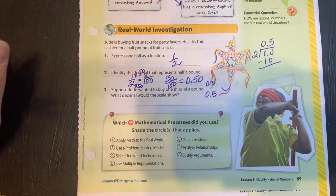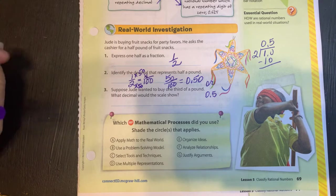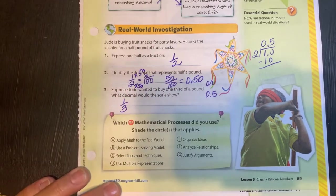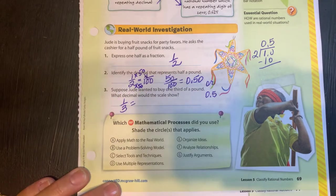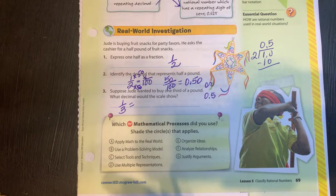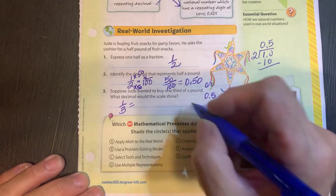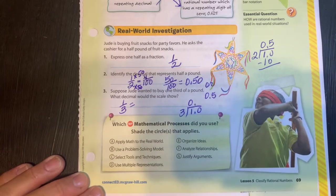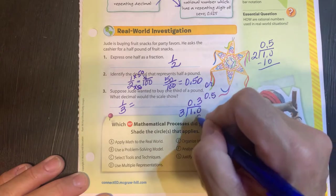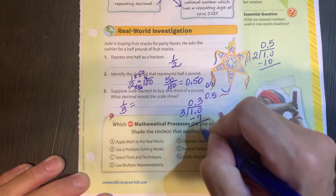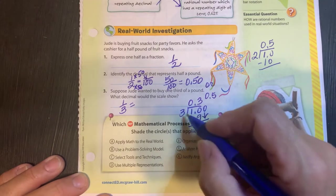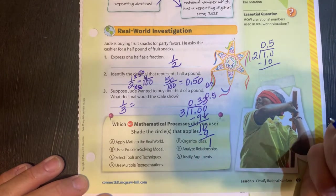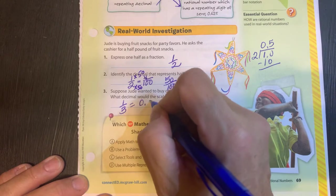It says suppose Jude wanted to buy one third of a pound. What decimal would the scale show? So one third looks like that, right? Three does not divide equally into 100, so we can't set it up where it's equal to 100. So I'm going to have to just divide. I'm going to divide three into 1.0. Three is going to go into 10 three times, which is nine. Subtract, you get one out of zero, bring it down. Three goes into 10 three times. And you see how this would just keep going on and on and on. And so this would be your repeating decimal.